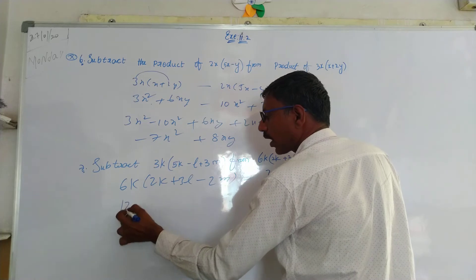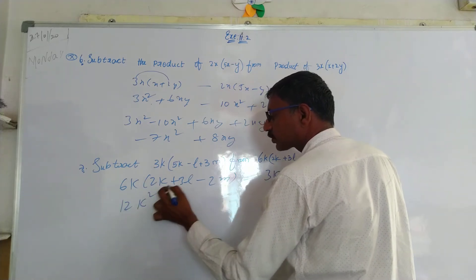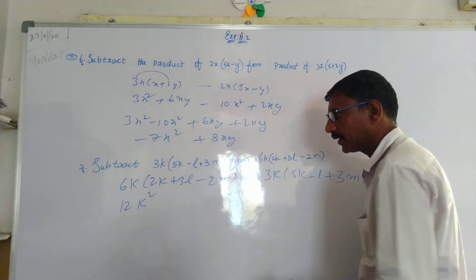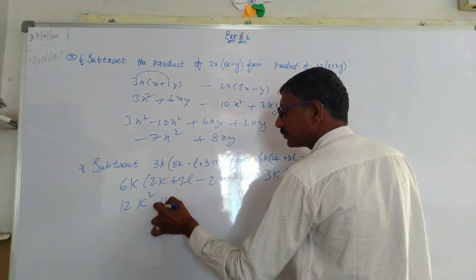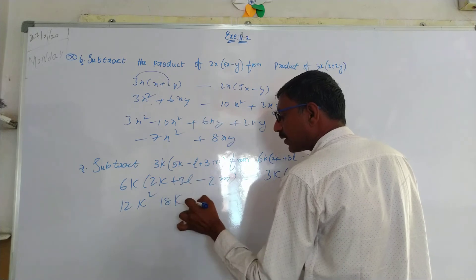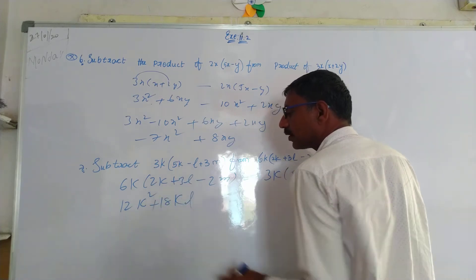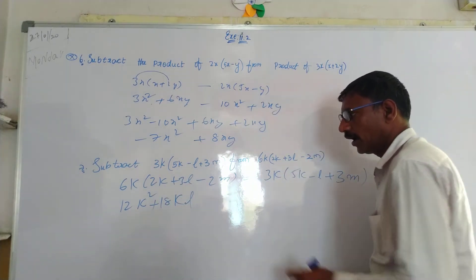6 times 2 is 12, K into K is K square. 6 times 3 is 18, K into L is KL, symbol plus. 6 times 2 is 12.